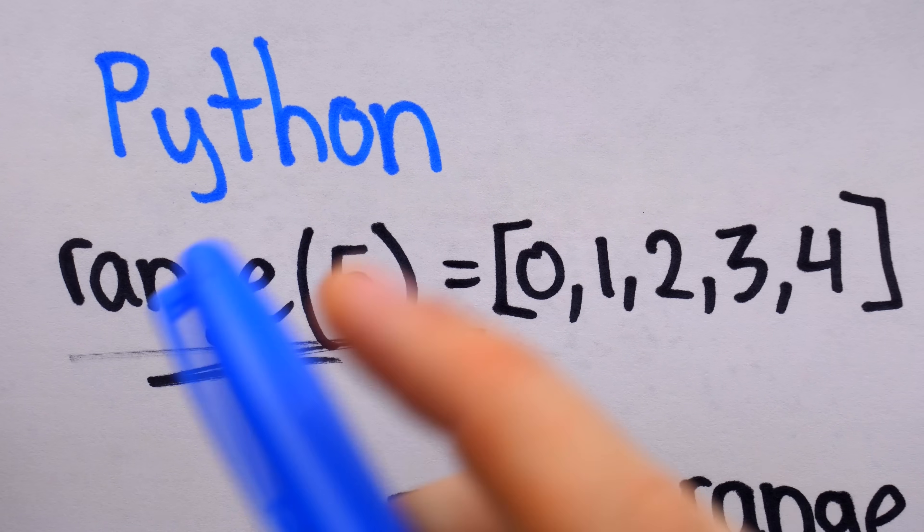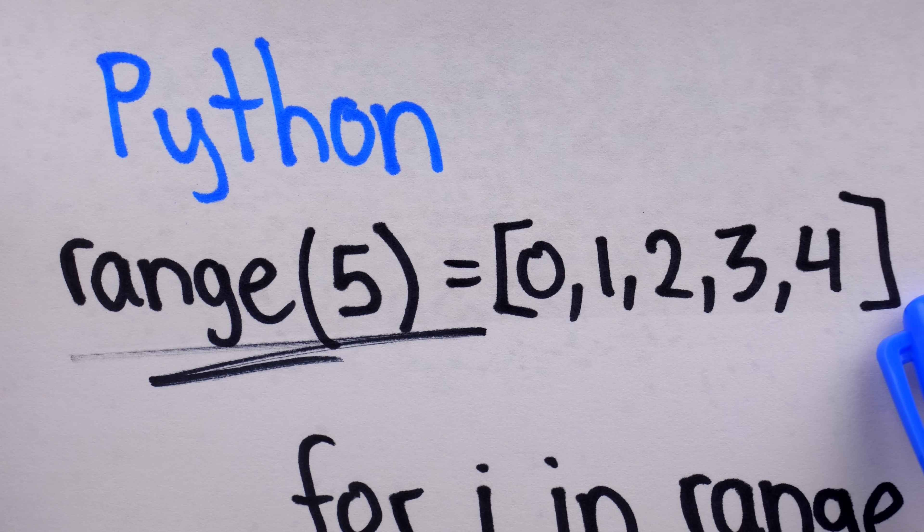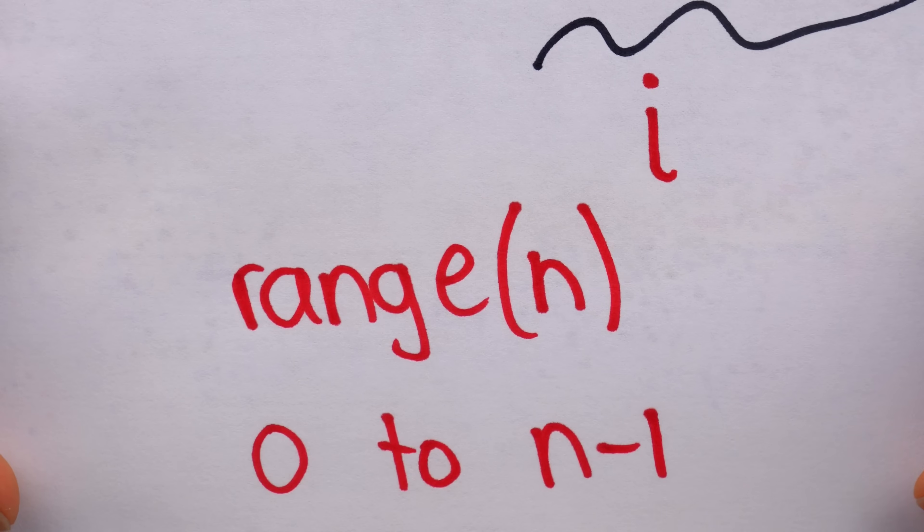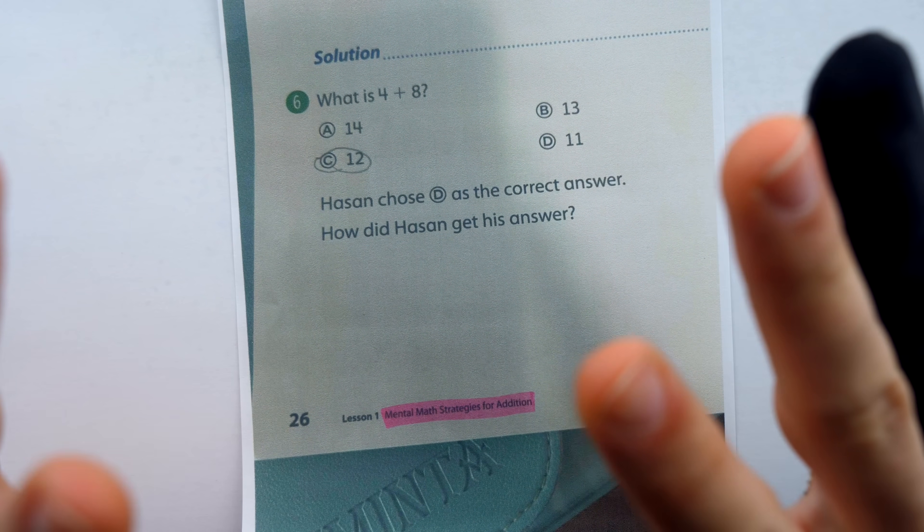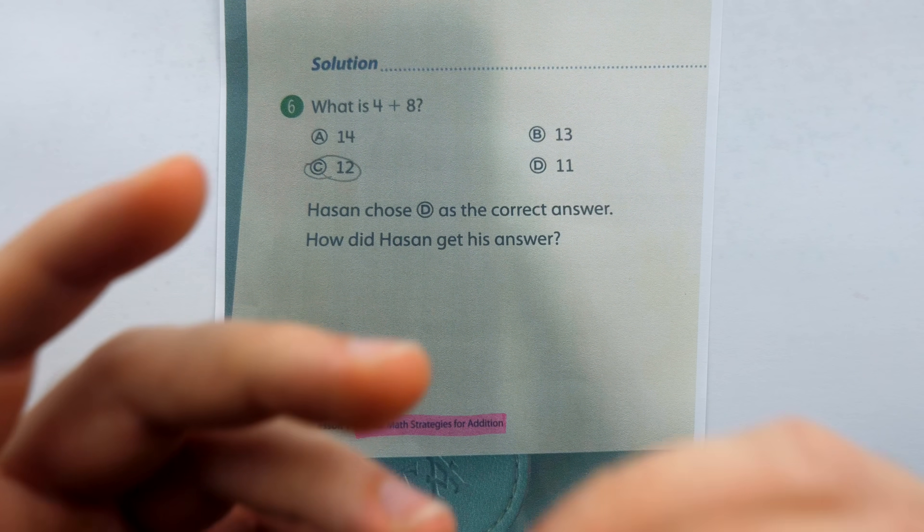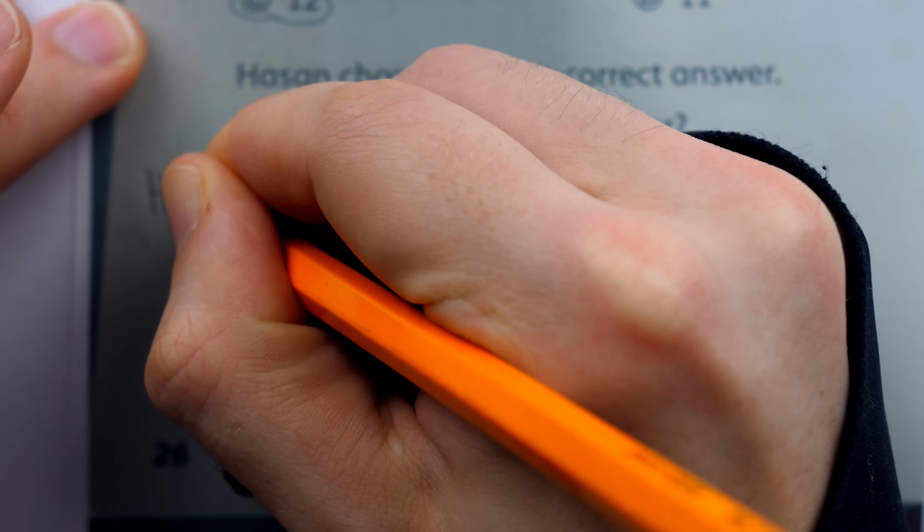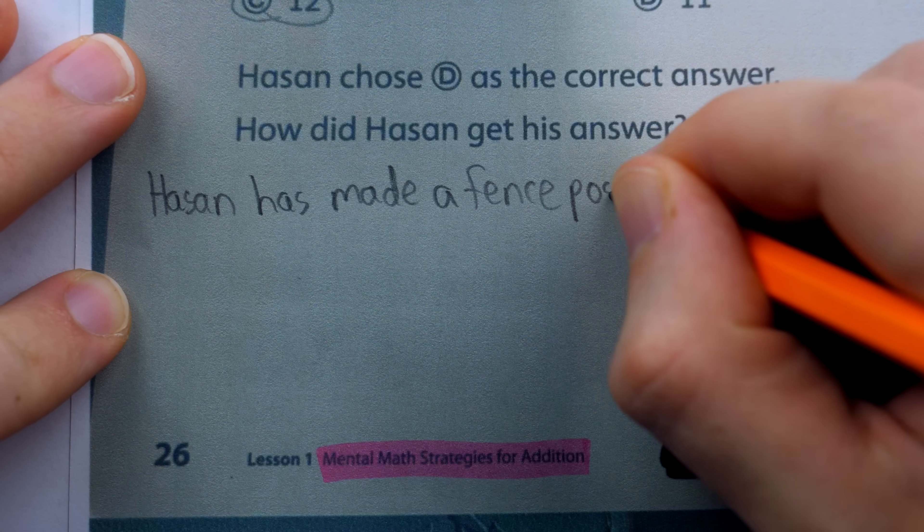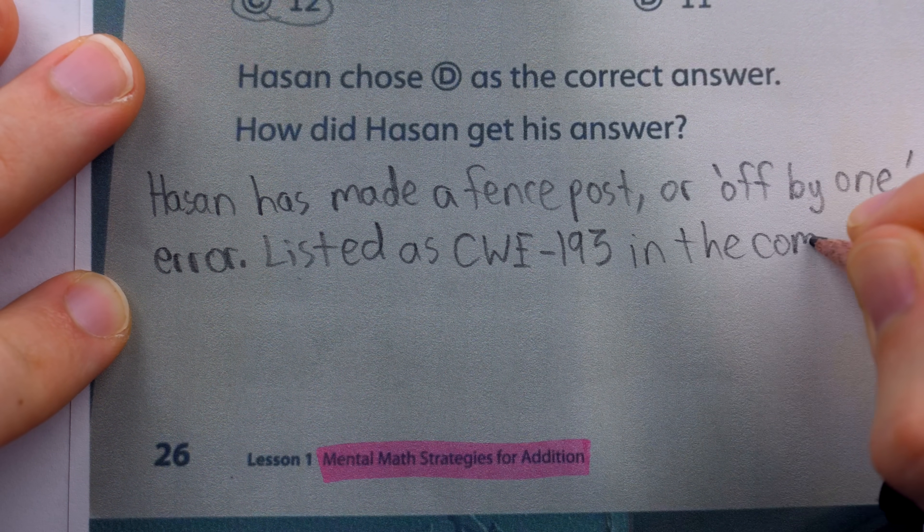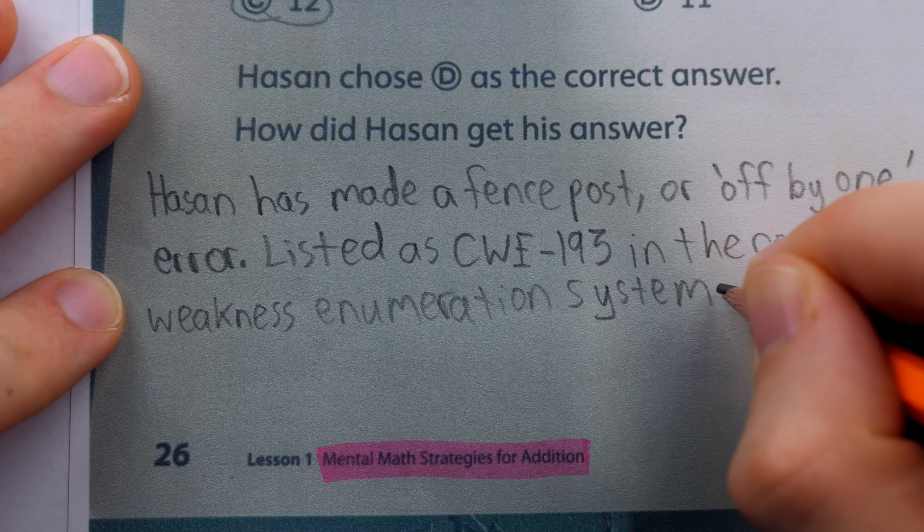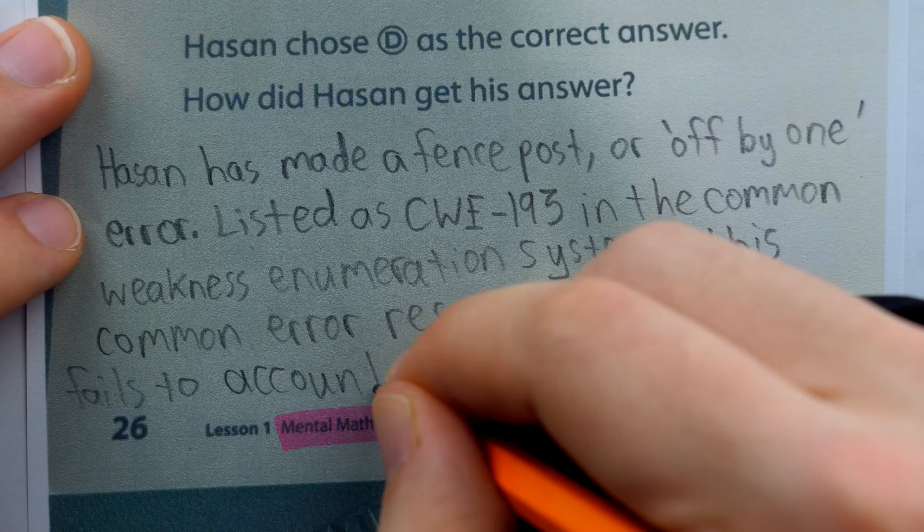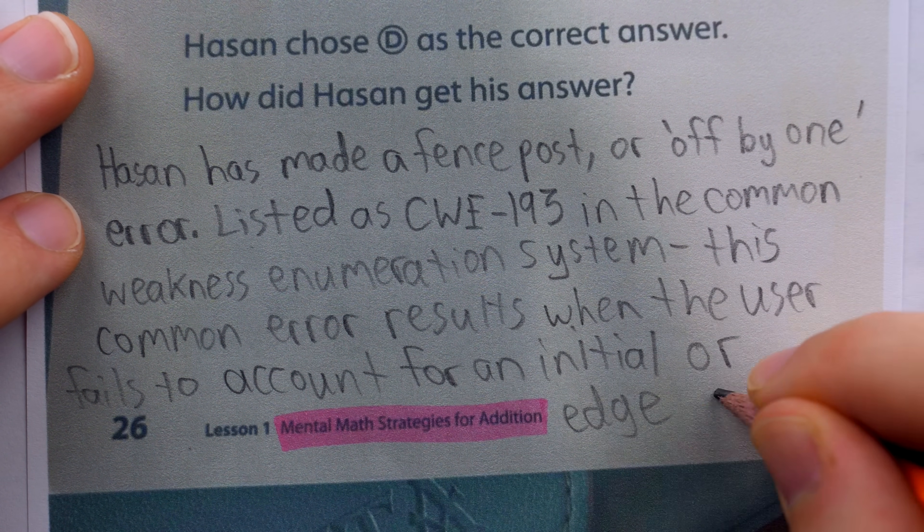And before anyone corrects me, yes, I know this isn't exactly how the range function works in modern versions of Python, but that's unimportant for this point. Anyways, let it be known that Hassan is in good company. His error has been made many times before, and will undoubtedly be made many times in the future. So this second grade math problem is not so bad. Obviously, the second grader is supposed to recognize that Hassan has made a fence post, or off by one error. Listed as CWE 193 in the Common Weakness Enumeration System, this common error results when the user fails to account for an initial, or edge case. Easy.